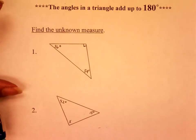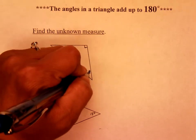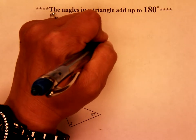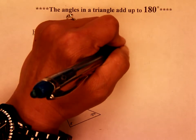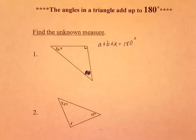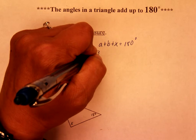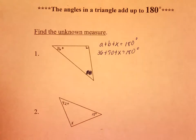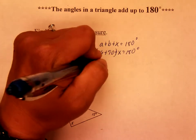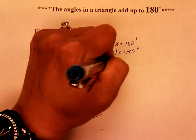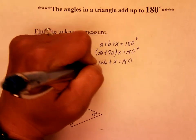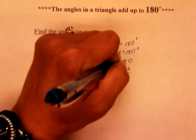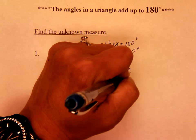Looking at number one, we had actually given you all three degrees, so here we're going to cross out this one. The way I want you to show your work is: first you have your formula — a plus b plus x is equal to 180 degrees. Replace your a and b with what numbers you know, so it's 36 plus 90 plus x is equal to 180 degrees. Add up your 36 plus 90 and you get 126 plus x is equal to 180. Subtract 126 on both sides, and x is equal to 54 degrees.